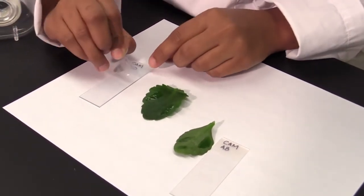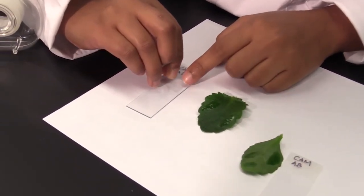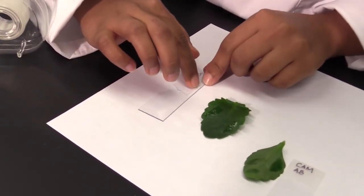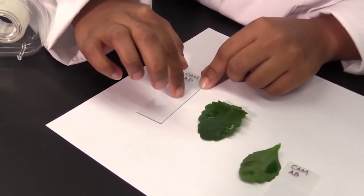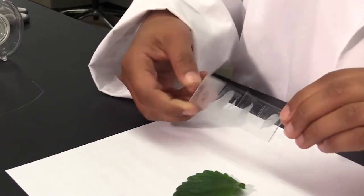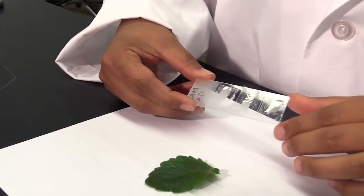Tape your impression to the appropriate microscope slide and use scissors to trim away any excess tape. You can fit three peels onto one slide.